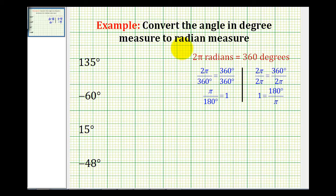Let's take a look at several examples of converting an angle in degree measure to radian measure. And to do this conversion, we're going to multiply by a unit fraction. Let's discuss briefly where that unit fraction comes from.